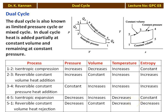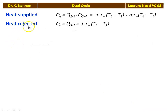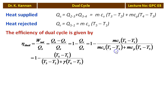Now we derive the efficiency of the dual cycle. There are two stages of heat supply: heat supply in process 2-3 (Q₂₃ = mCᵥ(T3 − T2), constant volume) and in process 3-4 (mCₚ(T4 − T3), constant pressure). The heat rejected is in process 5-1: mCᵥ(T5 − T1). Efficiency equals net work done divided by heat supply, which from the first law equals 1 − Qᴿ/Qₛ = 1 − Cᵥ(T5 − T1) / [Cᵥ(T3 − T2) + Cₚ(T4 − T3)].